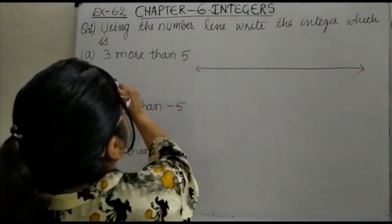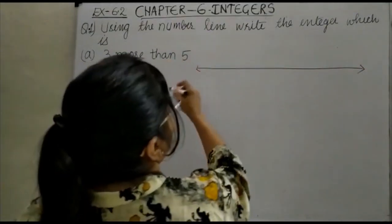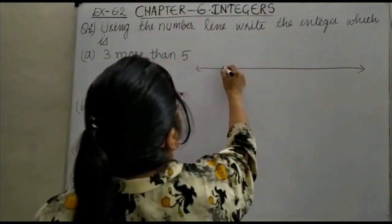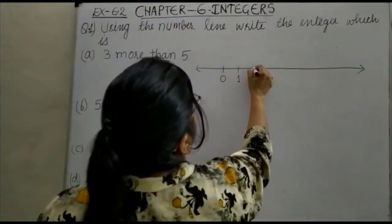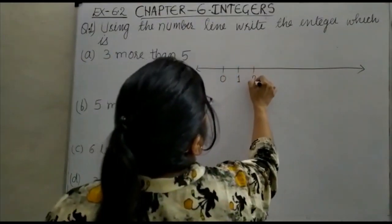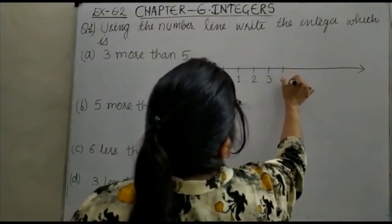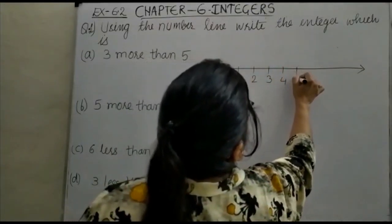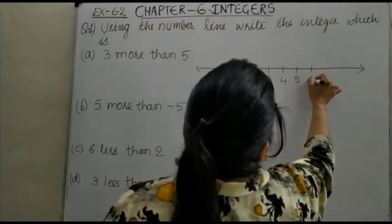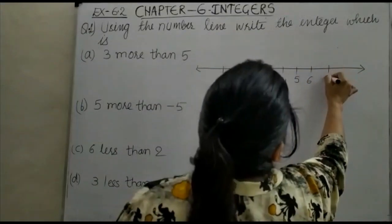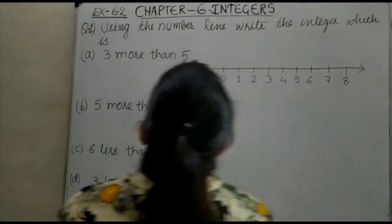It is 3 more than 5. You can see here: 0, 1, 2, 3, 4, 5, 6, 7, and 8.